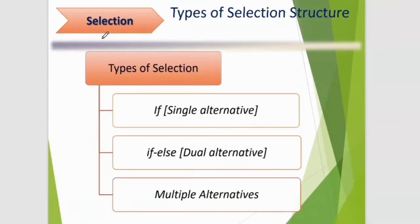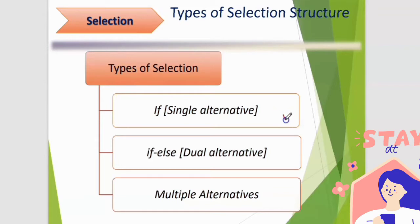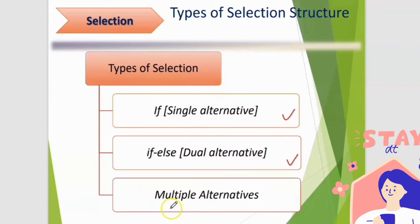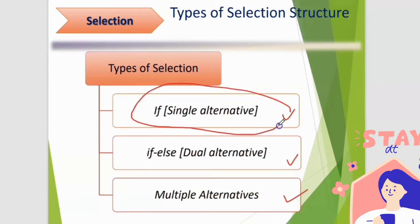Types of selection structure. The first one: if — single alternative. The second one: if-else — dual alternative. And the last one: multiple alternatives. Today we will focus on if — single alternative.